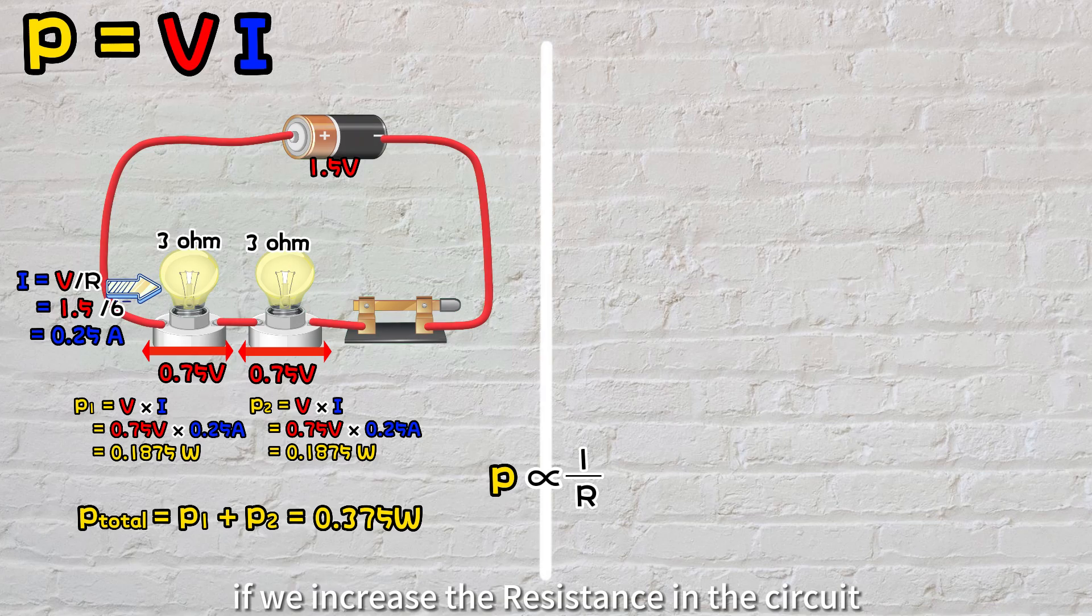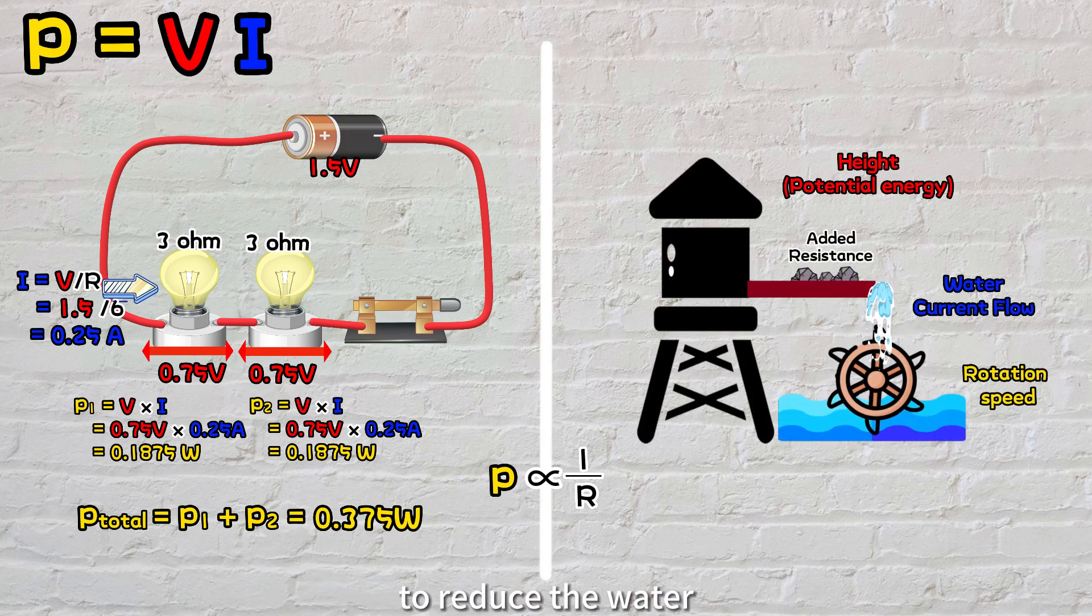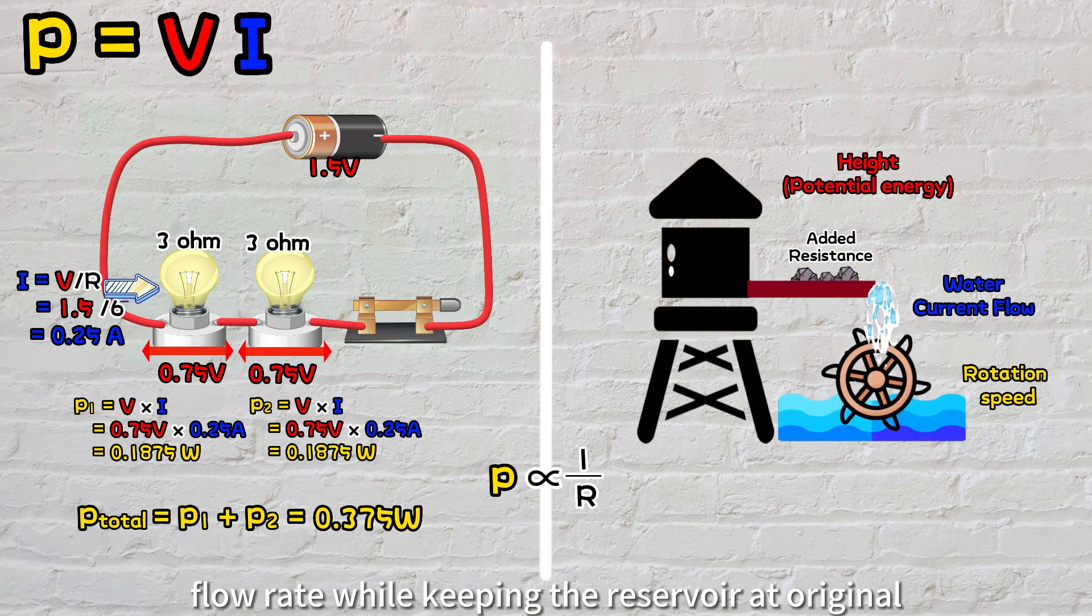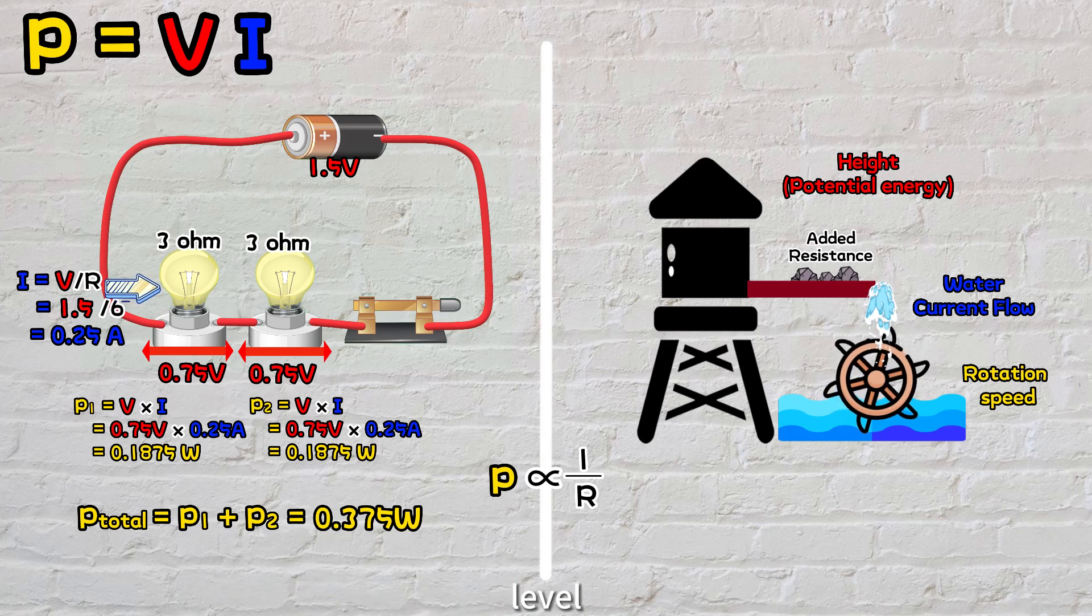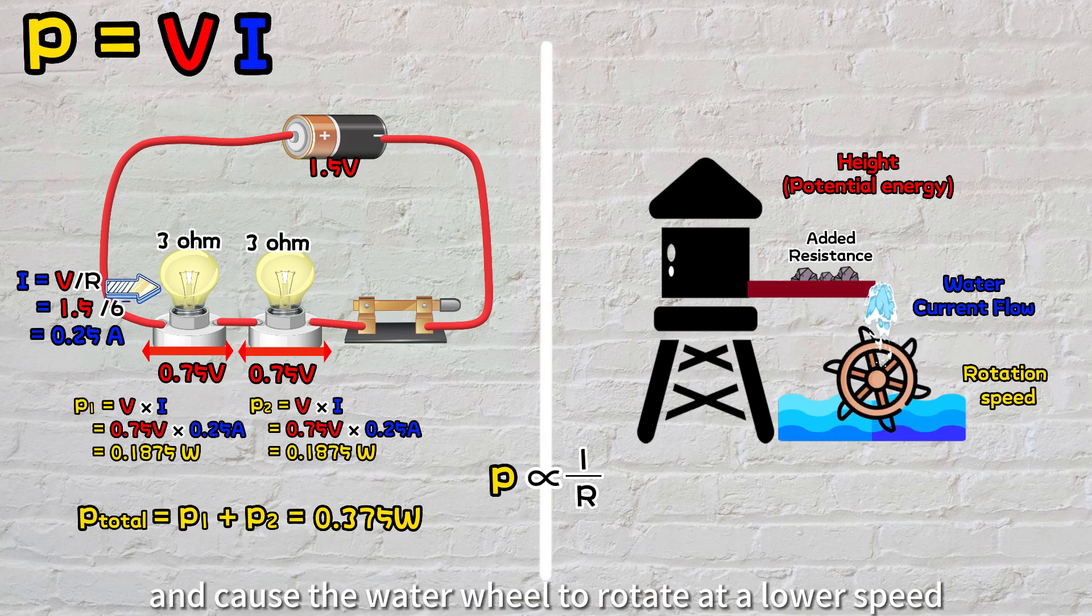On the contrary, if we increase the resistance in the circuit, the total power consumption decreases. It's similar to adding an obstruction to reduce the water flow rate while keeping the reservoir at original level. This would reduce the current flow and cause the water wheel to rotate at a lower speed.